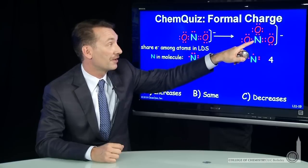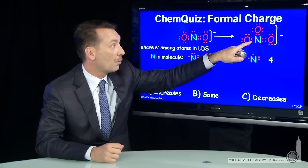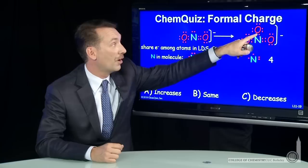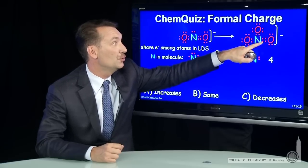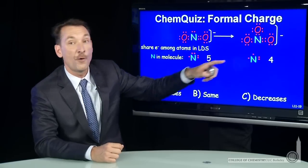This molecule, nitrogen shares all the electrons around it. It shares one from this bond, one from this bond, and two from this bond. One, two, three, four. Four electrons.